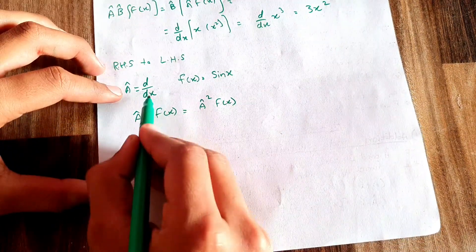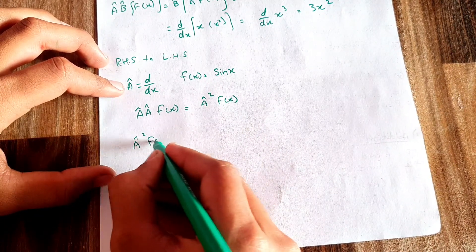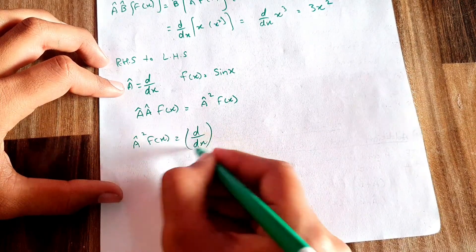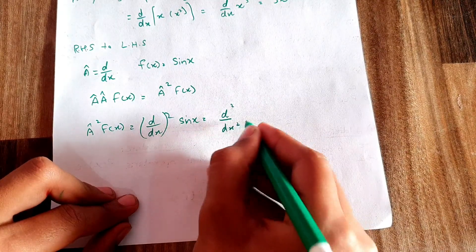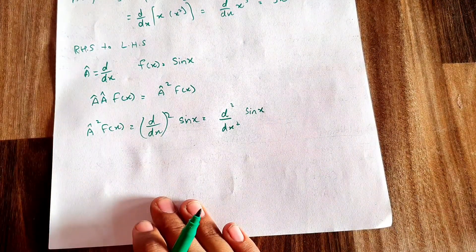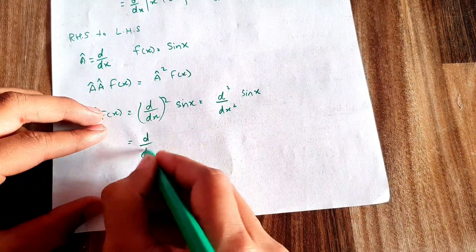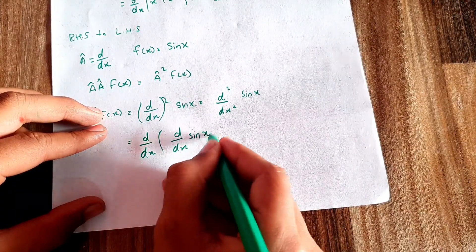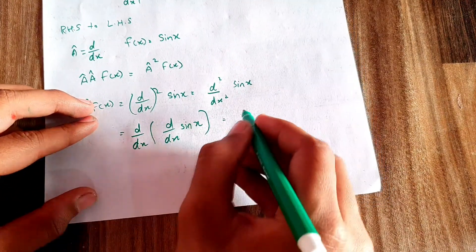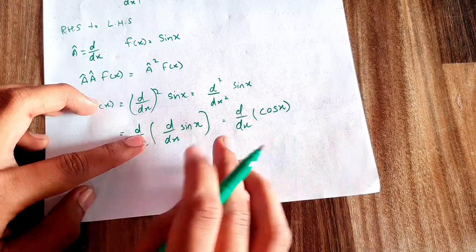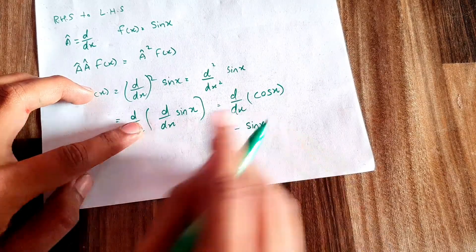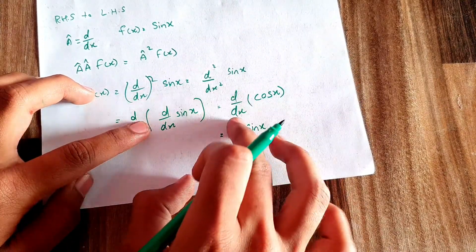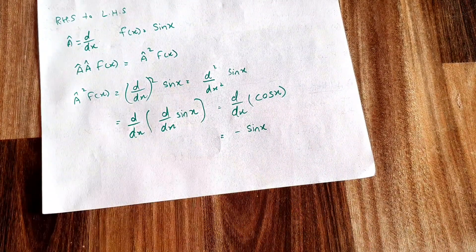Taking A = d/dx and f(x) = sin(x): A² f(x) = (d/dx)² sin(x) = d²/dx² sin(x). Breaking it down: first apply d/dx to sin(x) to get cos(x), then apply d/dx to cos(x) to get −sin(x). So the first derivative of sin(x) is cos(x), and the second derivative is −sin(x). This is how an operator applied more than once works.